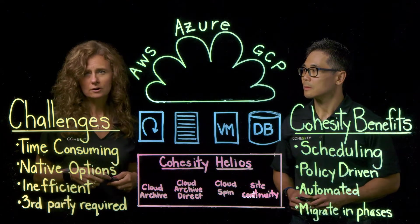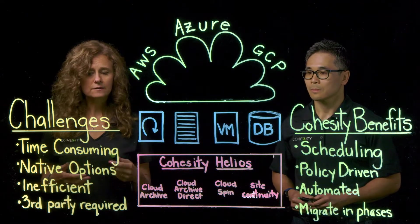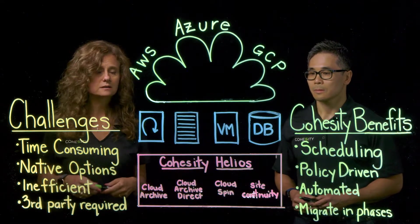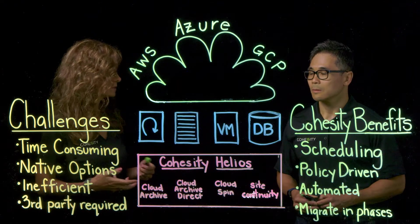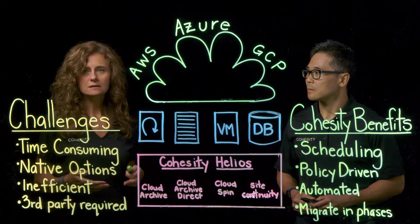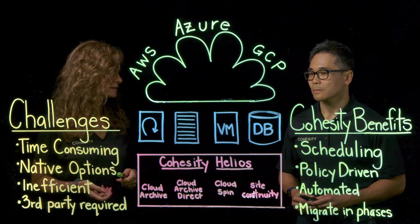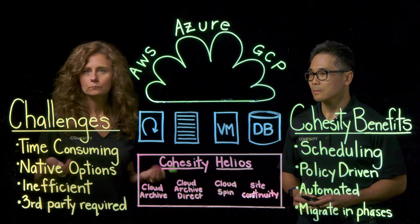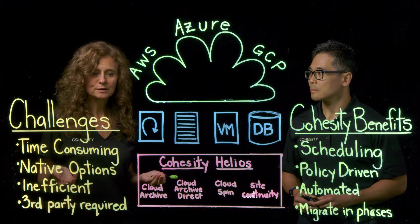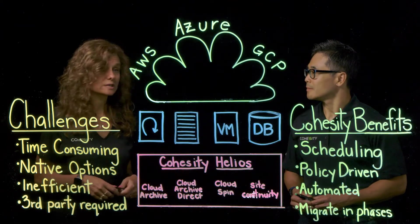What a lot of architects are finding is that a third-party solution is often required to get to the cloud in a more efficient way. We actually have multiple options at Cohesity.